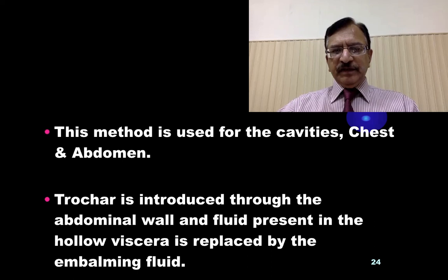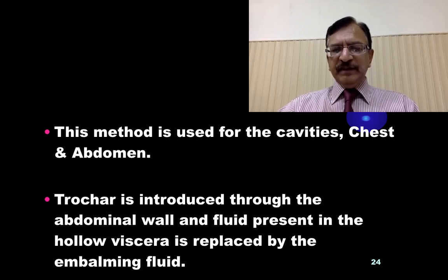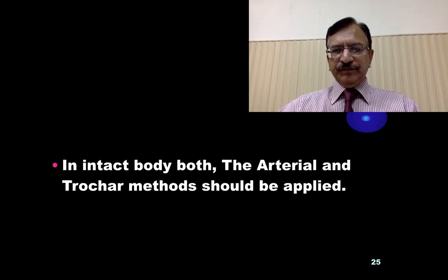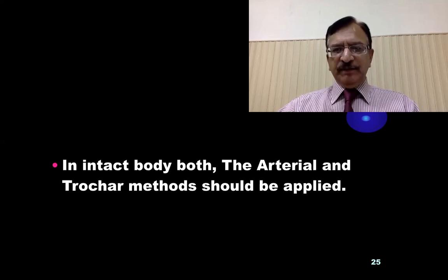In the trocar method, this method is used for the cavities — chest and abdomen. The trocar is introduced into the abdominal wall, and the fluid present in the hollow viscera is replaced by the embalming fluid. In intact bodies, both the arterial and trocar methods should be applied.